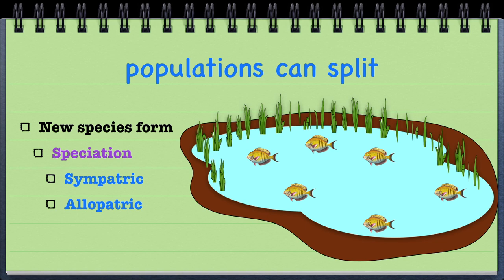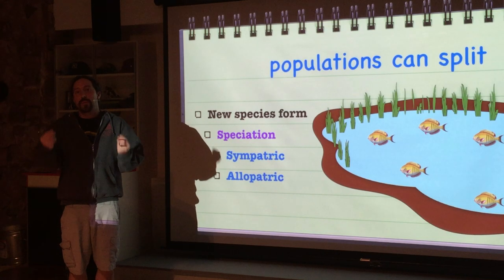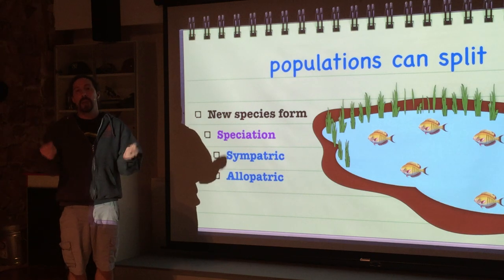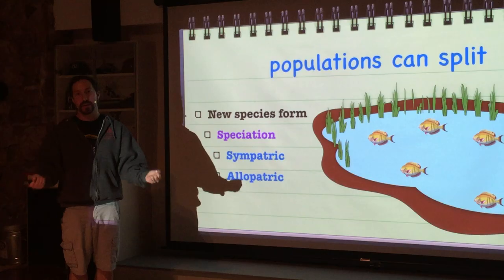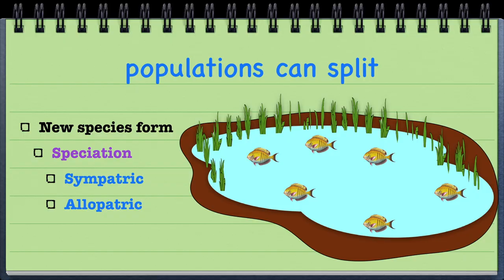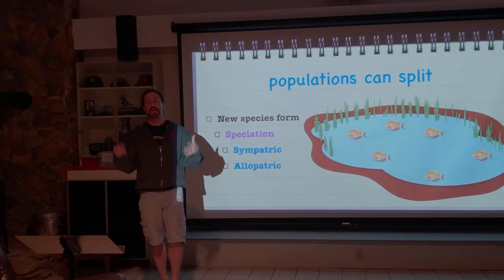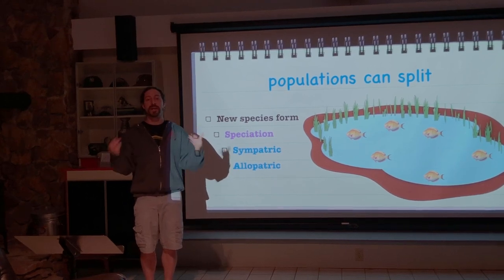Over time, changes can occur to the degree where new species are formed. If enough small changes occur where some sort of reproductive isolating mechanism appears, you're going to have two completely different species. If over time we have developed enough mutations in a grouping where it's now no longer able to breed with the original population — separating out those gene pools — that means we have a separate species because they're reproductively isolated from each other. That is called speciation, and speciation can form in two different types.